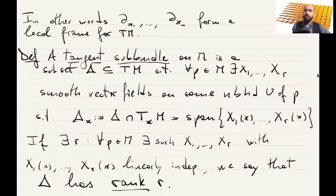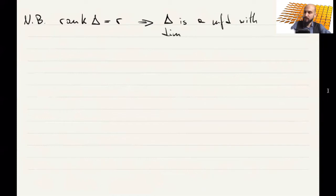We will mostly work with constant rank tangent sub-bundles. Some remark: rank of delta equal to r is saying that delta is a manifold with dimension of delta equal to the dimension of the manifold plus r.